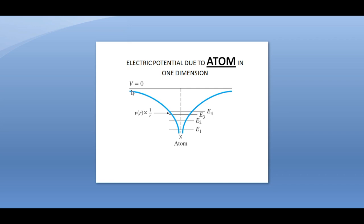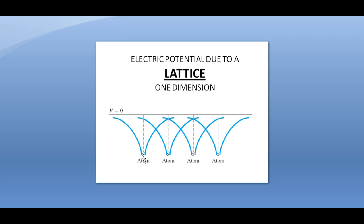As we move away from the atom — away from the positive charge on the lattice — the potential experienced by the electron decreases. So, for a single isolated atom, it has this type of potential. Now, if we extend this to a cluster of atoms, say a series of atoms in one dimension — four atoms as depicted in the picture — each atom will have its own potential, and you can extend it in both positive and negative x directions.